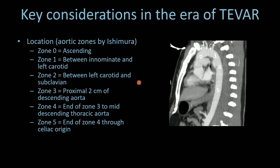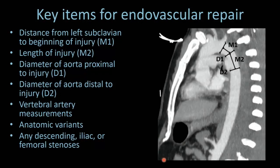A quick mention about endovascular repair and things you might want to consider in your report. Surgeons use the aortic zones by Ishimura to classify location, and the hotbed is zones 3 and 4. I think it's important in your report, particularly in descending aortic injuries that might be treated with endovascular repair, to give measurements. That includes defining the distance from the left subclavian to the beginning of the injury—a 2-centimeter seal zone is typically needed. You should provide vertebral artery measurements. If they have a dominant left vertebral artery, they'll likely need a left carotid to subclavian artery bypass.